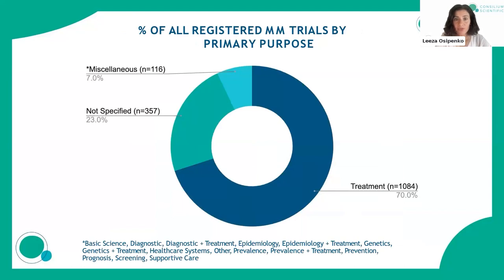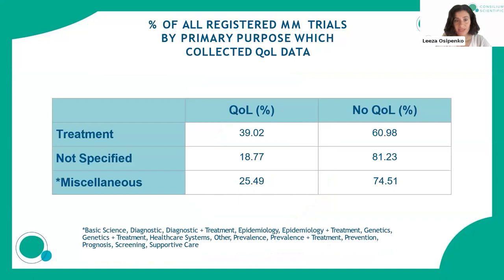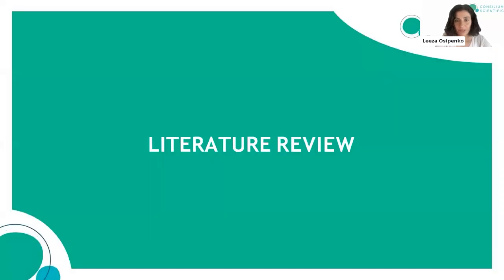Most myeloma trials have treatment as their primary purpose. Only about 40 percent of treatment-dedicated trials collect quality of life data, which is concerning because these are interventional trials where patients are frequently exposed to regimens or medications that have not been tested before in these populations.